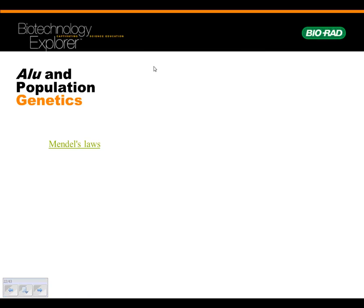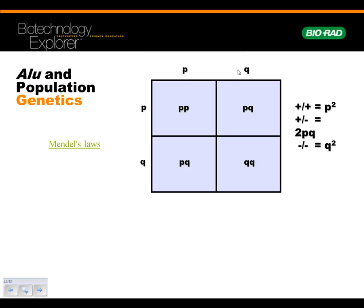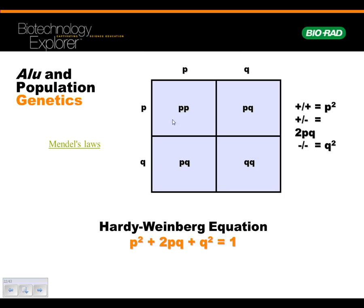We can make a Punnett square for P and Q. P represents the positive allele — you have the allele. Q means you don't have the allele. So we can make a little Punnett square: P times P gives P-squared, P times Q gives PQ, Q times P gives PQ, Q times Q gives Q-squared. The chances are you have P-squared, Q-squared, or two PQ. This is called the Hardy-Weinberg equation, and the total of this adds up to one.